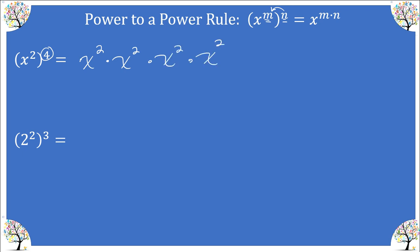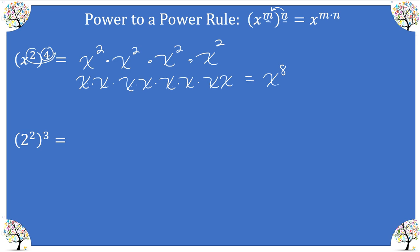Starting with the outside power, this is saying we have four x-squareds being multiplied. I'm going to expand x squared four times. X squared is really x times x, so I expand each one of those. When I write this as one single factor, I have x to the one, two, three, four, five, six, seven, eight — x to the eighth. You can see that applying the rule gives us the same answer.